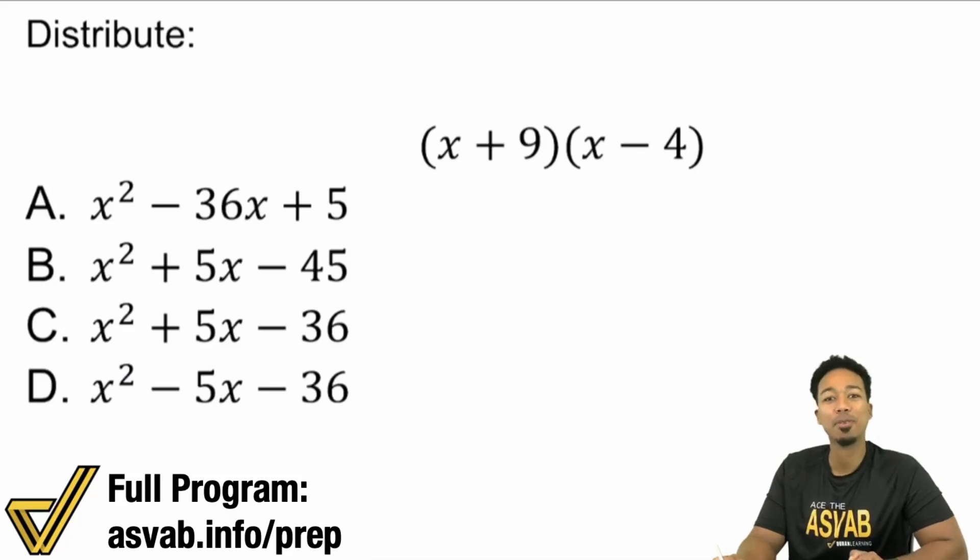Hey, what's going on my math party people? Anderson here, your ASVAB coach. So we are looking at polynomials here, looking at distributing the distributive property. You can call it foiling, binomial distribution, whatever you want to call it.